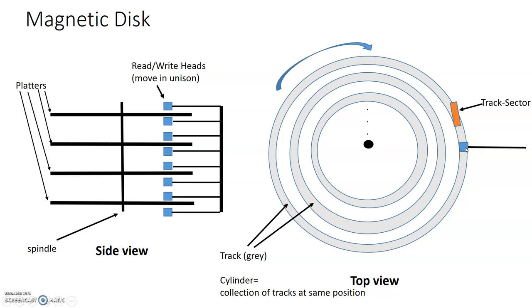If it wants to go to another track, it'll then move the read-write head. It'll move in unison. It'll move into another track. But the track is where the data is recording.